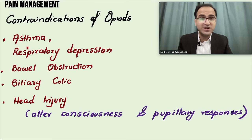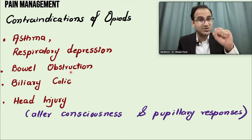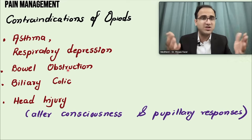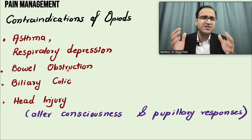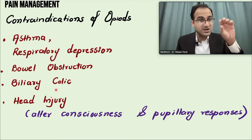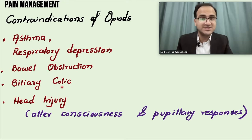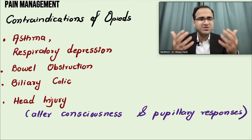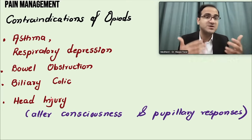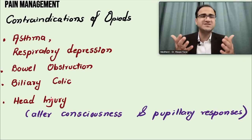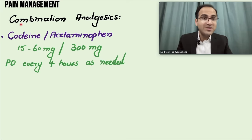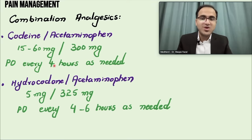Contraindications of opiates: avoid in asthma due to respiratory depression; avoid in bowel obstruction as they slow gut motility — in bowel obstruction use paracetamol, avoiding both NSAIDs and opiates; avoid in biliary colic as they cause spasm of the sphincter of Oddi; avoid in head injury as they alter consciousness and cause miosis, masking important pupillary signs needed for diagnosis and monitoring.